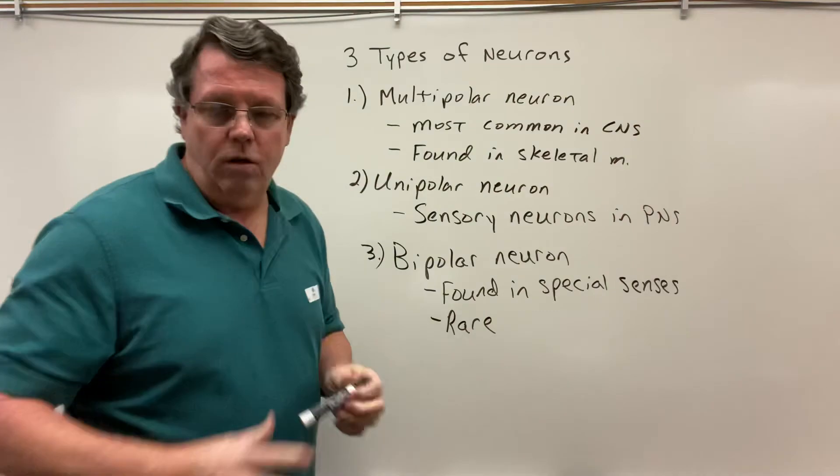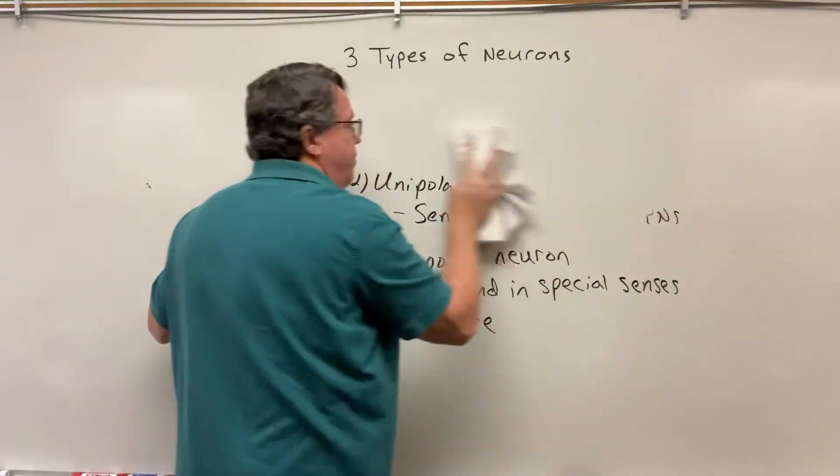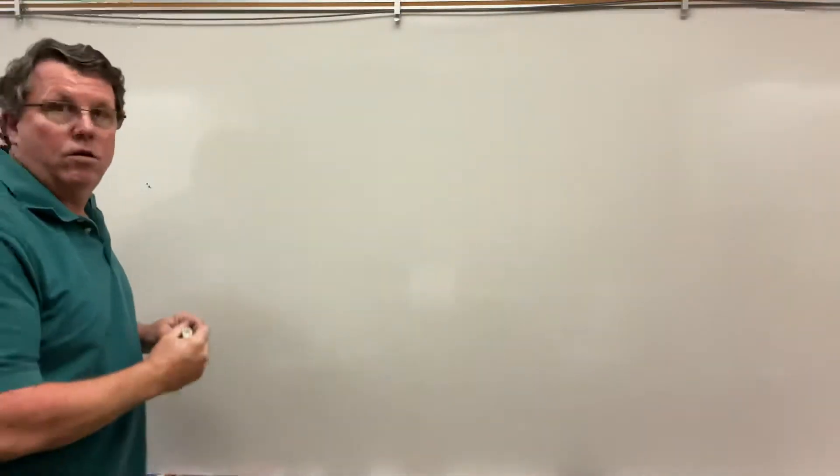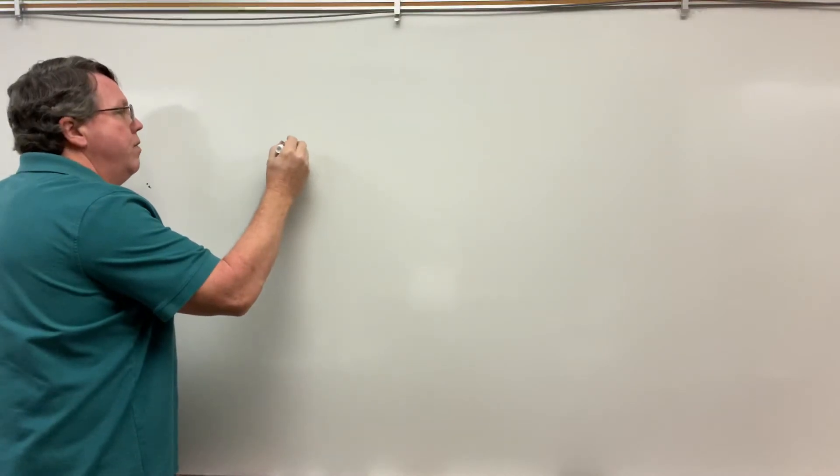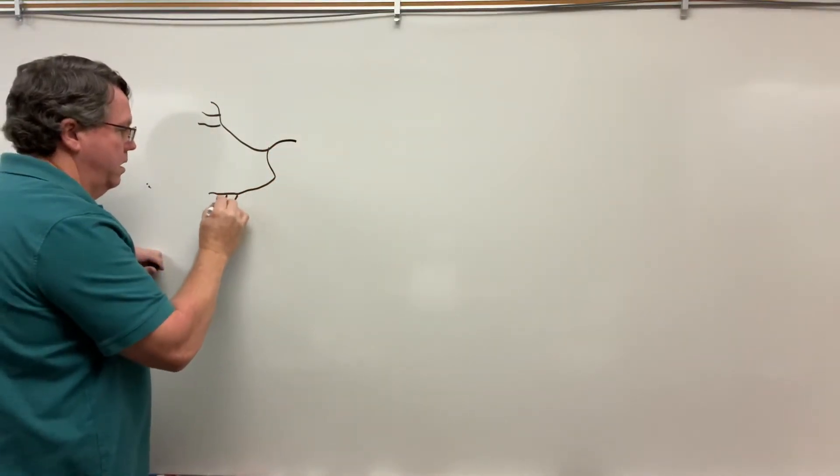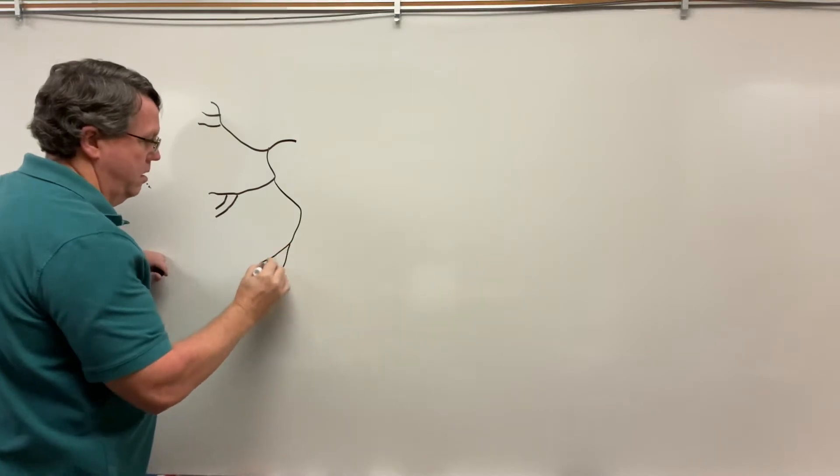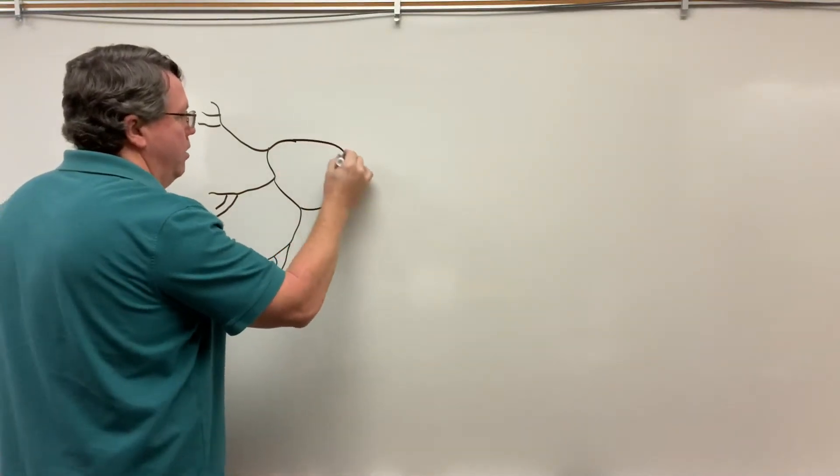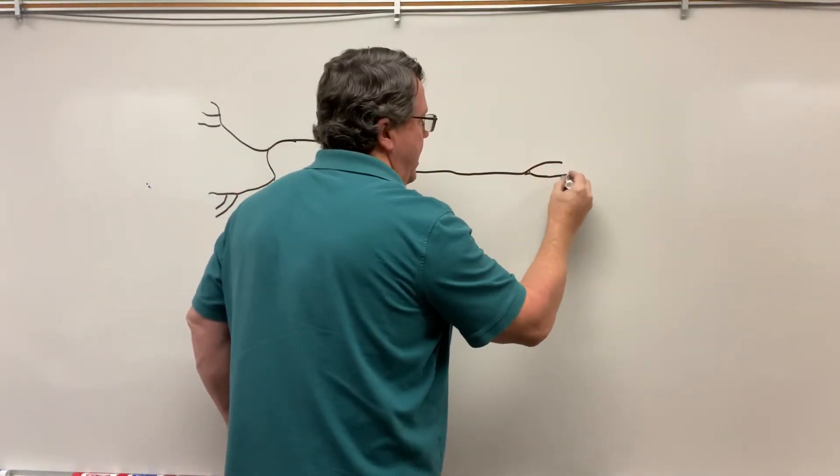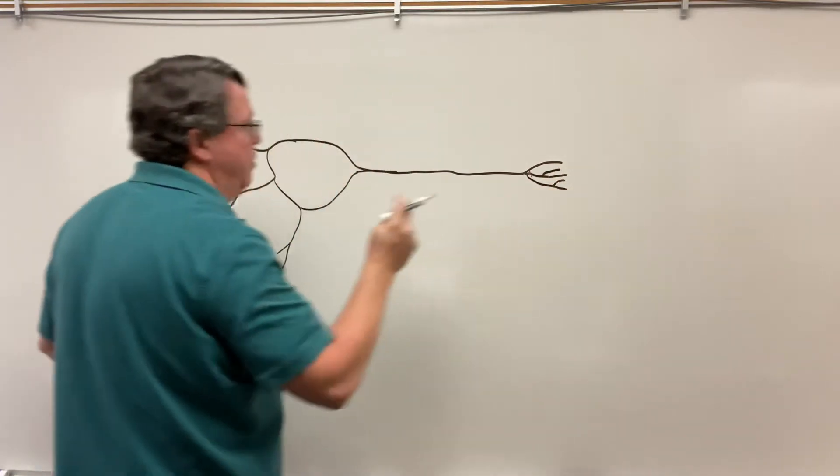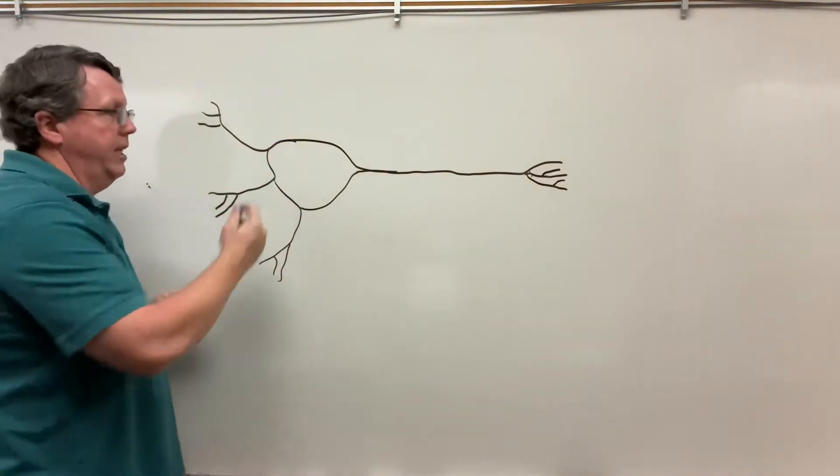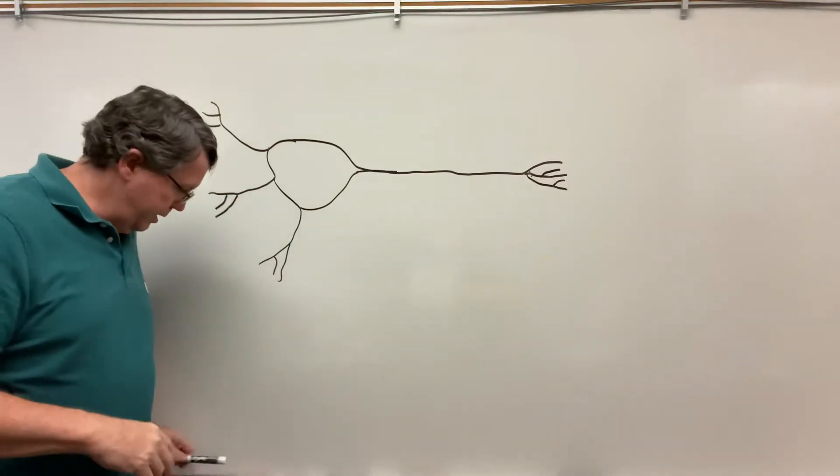Now we're going to take a look at my multipolar neuron. I'm going to start over here and draw some dendrites. Then we're going to have our cell body, and then this would come out with my axon and axon terminals down there. This is my multipolar neuron. If you notice, I have several dendrites, one axon, and at the end it splits up a little bit.